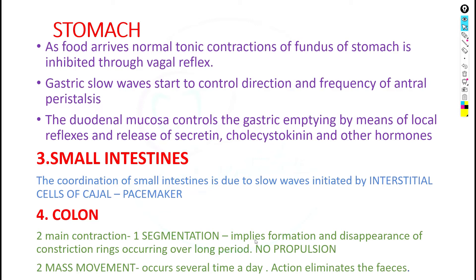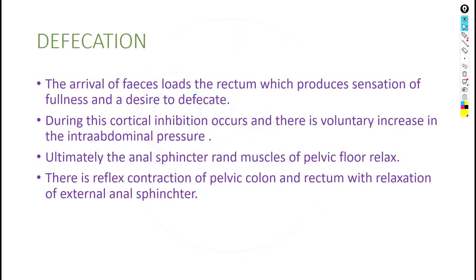Segmentation involves the formation and disappearance of constriction rings occurring over a long period. Contractions occur in segments — there is formation and then disappearance of constriction rings — and there is no propulsion of feces in segmentation. In mass movement, contractions occur several times a day and act to eliminate feces. The mass movement type of contraction eliminates the feces once food has reached the colon.